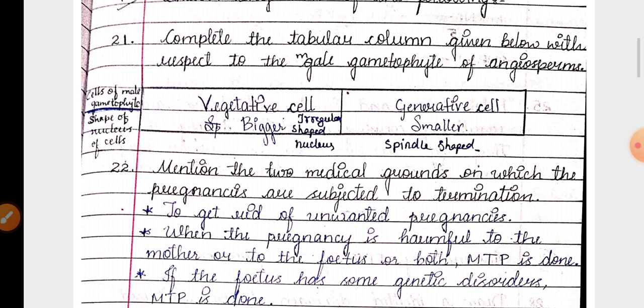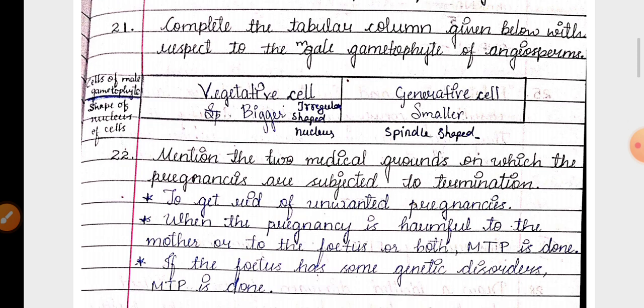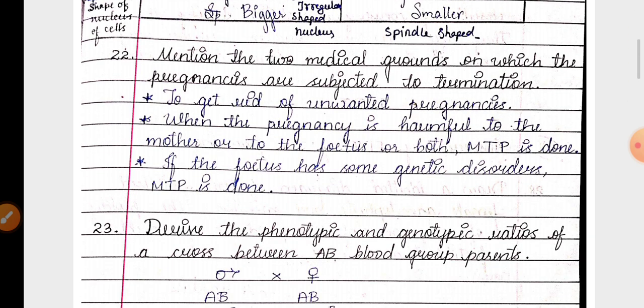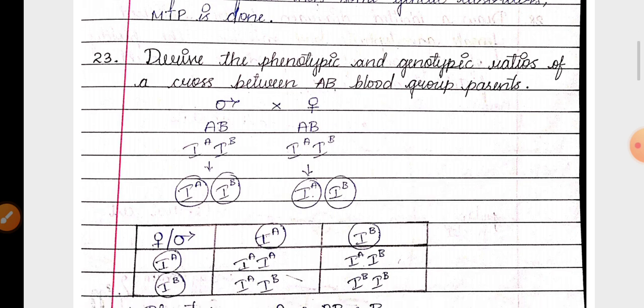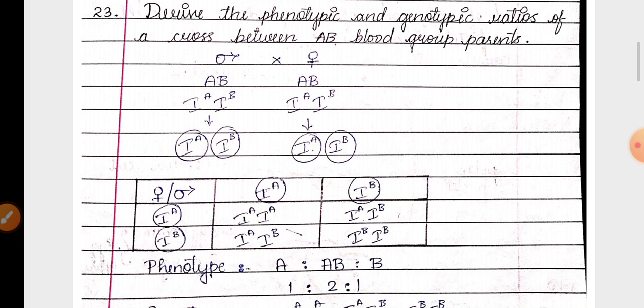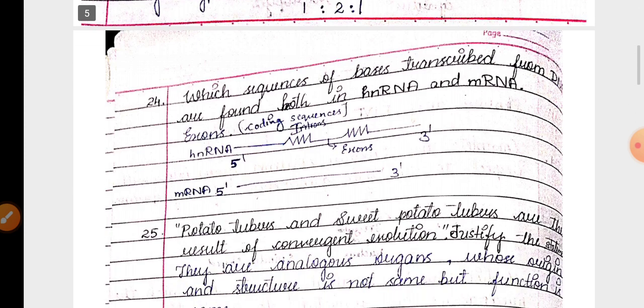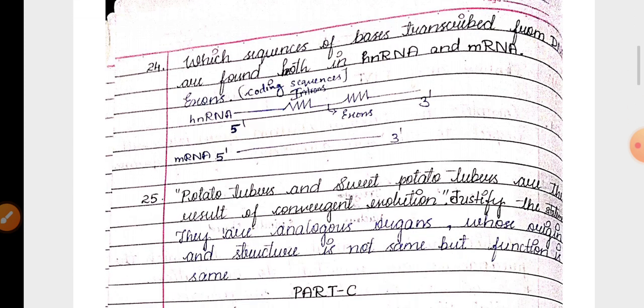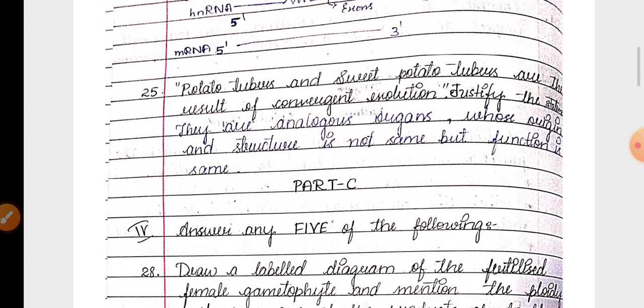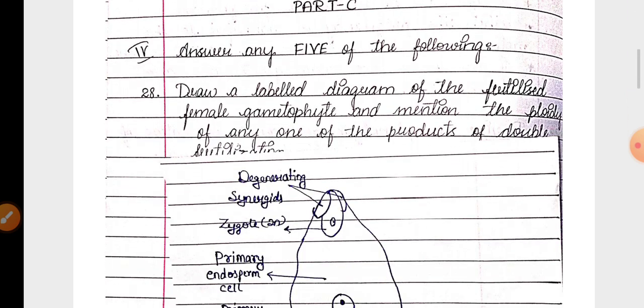First question related to male gametophyte pollen grain. 22nd question related to MTP. 23rd related to blood grouping. Then 24th question is from molecular basis of inheritance about mRNA. Then 25th question is from evolution chapter about analogous organs.